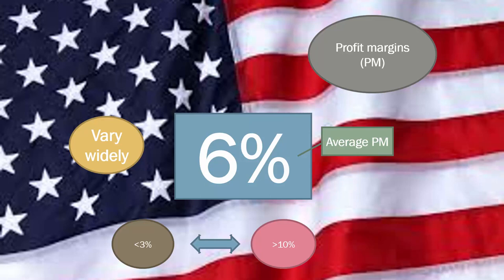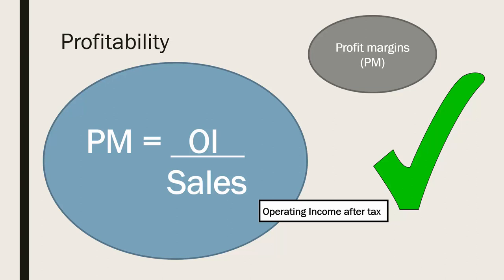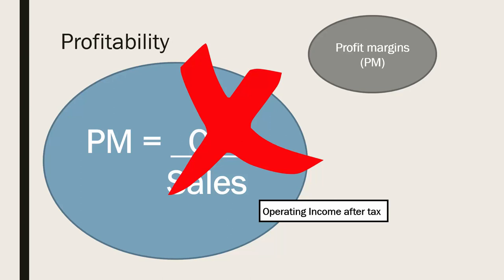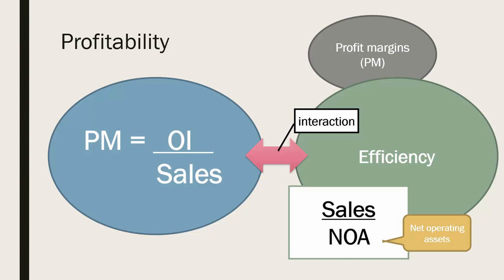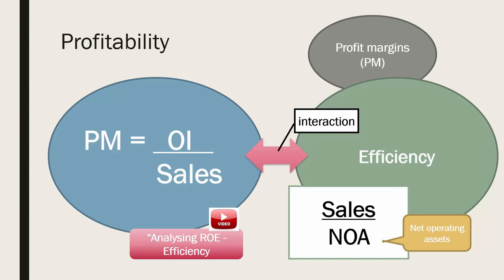While most people in business have a strong understanding of the importance of profit margins in generating returns to shareholders, I often find much less understanding of the fact that profit margins are not of importance in themselves. Rather, it is the interaction or combination of profit margins with efficiency — the amount of sales generated by each dollar of net operating assets invested in the business — that is critical. We consider efficiency in the video analyzing return on equity efficiency.